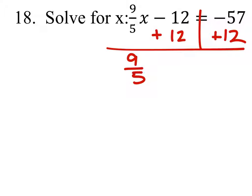So we have 9/5x equals, because that's a 0, negative 57 plus 12 would be negative 45. Oh, I forgot my x, there we go.